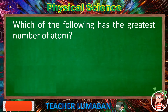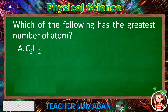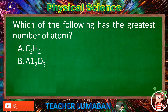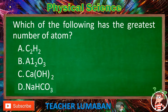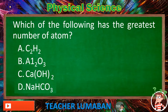Which of the following has the greatest number of atoms? Letter A: C₂H₂. Letter B: Al₂O₃. Letter C: Ca(OH)₂. Letter D: NaHCO₃. Choose the suitable answer based on the given choices in 5 seconds.